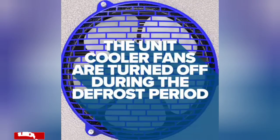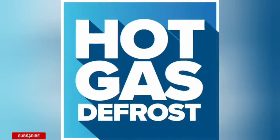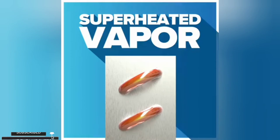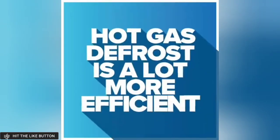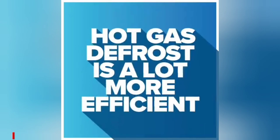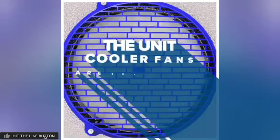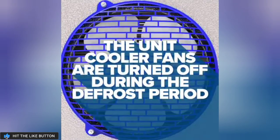Last is the hot gas defrost system, which uses the superheated vapor from the compressor discharge port to warm the evaporator coil to melt the ice. While not as widely applied as electric defrost, hot gas defrost is a lot more efficient, since the heat source flows through the coil circuit allowing more effective heat exchange with the formed ice. During this type of defrost, the evaporator fans are turned off for the defrost period.